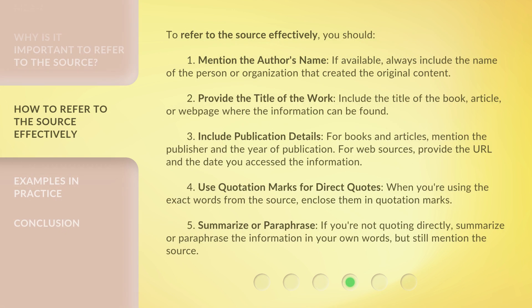To refer to the source effectively, you should: 1. Mention the author's name — if available, always include the name of the person or organization that created the original content. 2. Provide the title of the work — include the title of the book, article, or webpage where the information can be found. 3. Include publication details — for books and articles, mention the publisher and the year of publication; for web sources, provide the URL and the date you accessed the information.